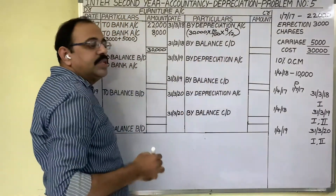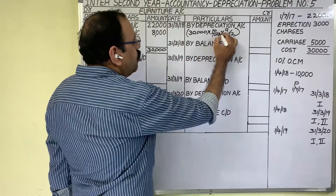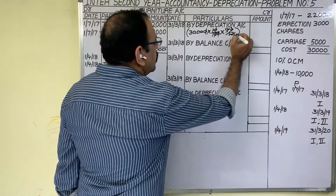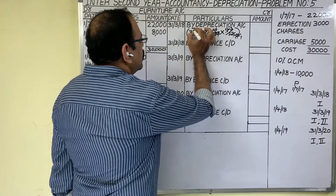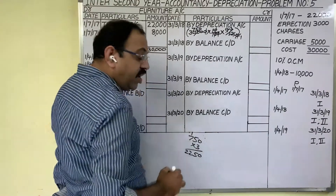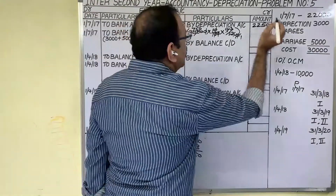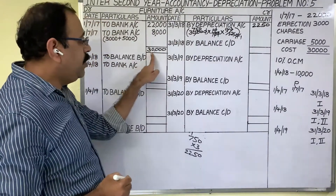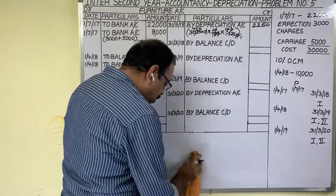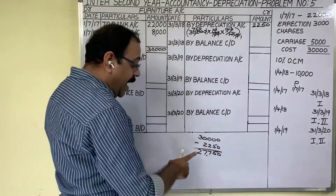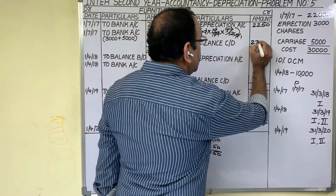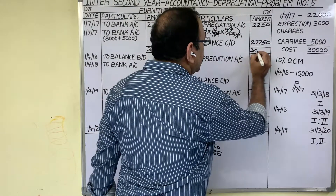We should provide depreciation only for 9 months. Calculating: 30,000 × 10% × 9/12 = 750 × 3 = 2,250 rupees depreciation for 9 months. Then find out the balance carried down: debit total minus credit total = 30,000 minus 2,250 = balance carried down of 27,750. Write down that amount, put the credit side total. First year completed.